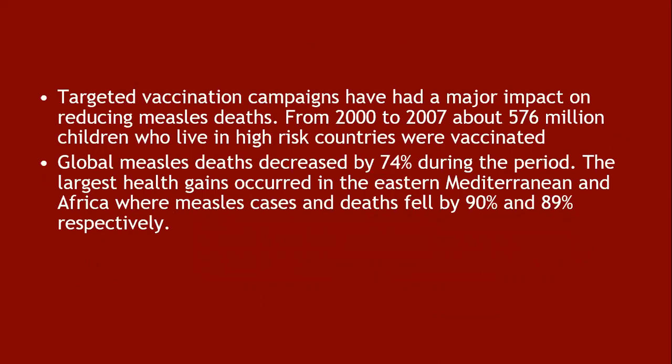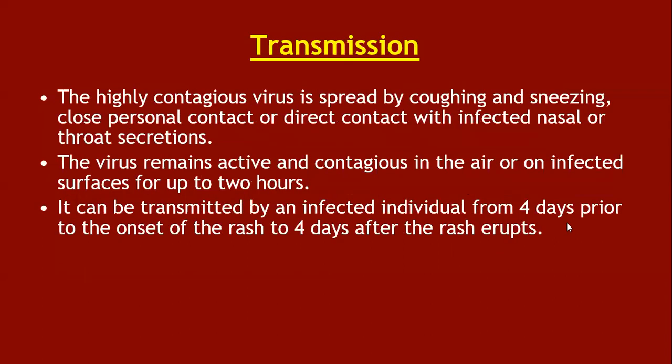Targeted vaccination campaigns have had a major impact on reducing measles deaths. From 2000 to 2007, about 576 million children in higher-risk countries were vaccinated, and global measles deaths decreased by 74 percent during that period. The largest health gains occurred in the Eastern Mediterranean and Africa, where measles cases and deaths fell by 90 and 89 percent respectively.